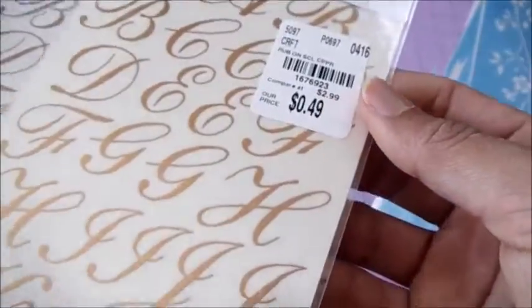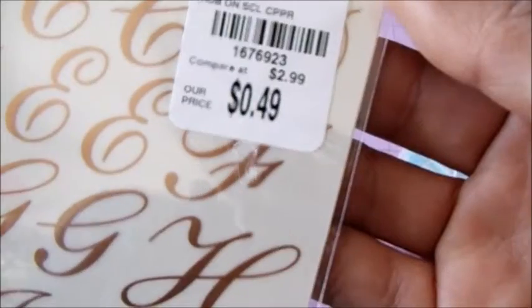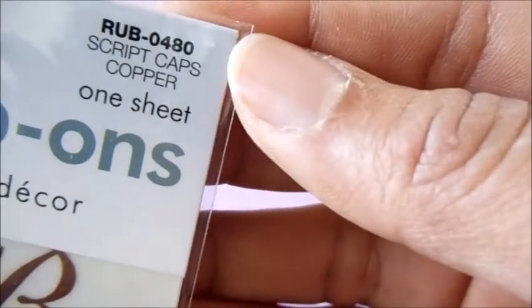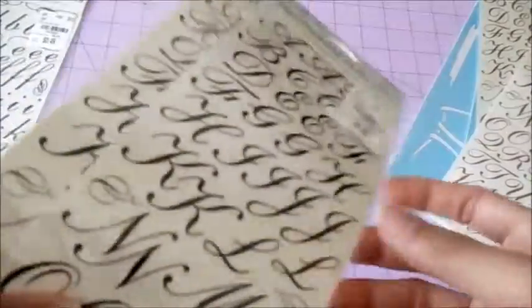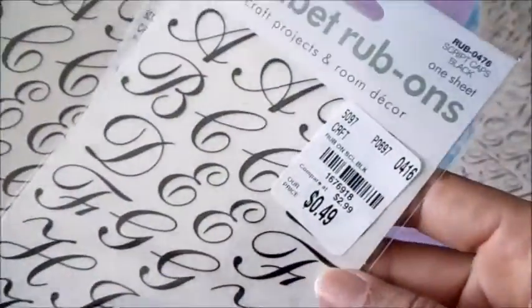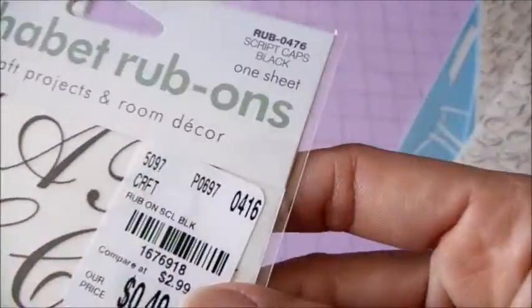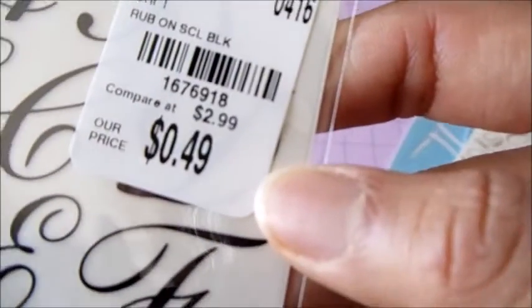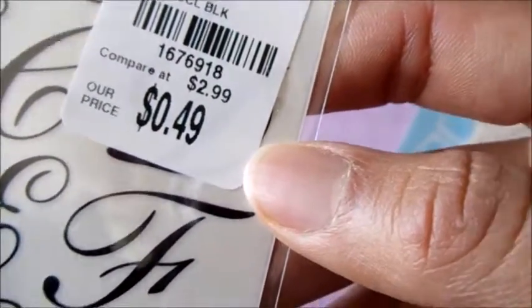I found two of those. I grabbed this black one, also rubons, so it's black. This is the style of the letters, pretty. Here is the price and the scale and I got two of those.